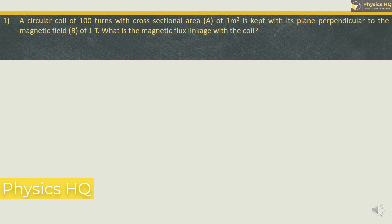A circular coil of 100 turns with a cross sectional area of 1 meter square is kept with its plane perpendicular to the magnetic field B of 1 tesla. What is the magnetic flux linkage with the coil? Options are 1 Weber, 100 Weber, 50 or 200 Weber.